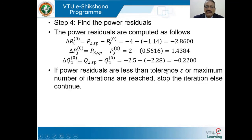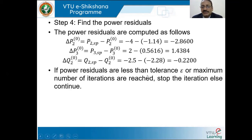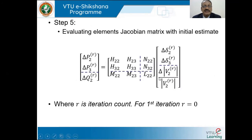If power residues are less than the tolerance ε, or the maximum number of iterations is reached, we stop the program. Otherwise, if power residues are not less than the tolerance, we proceed to update the Jacobian elements.